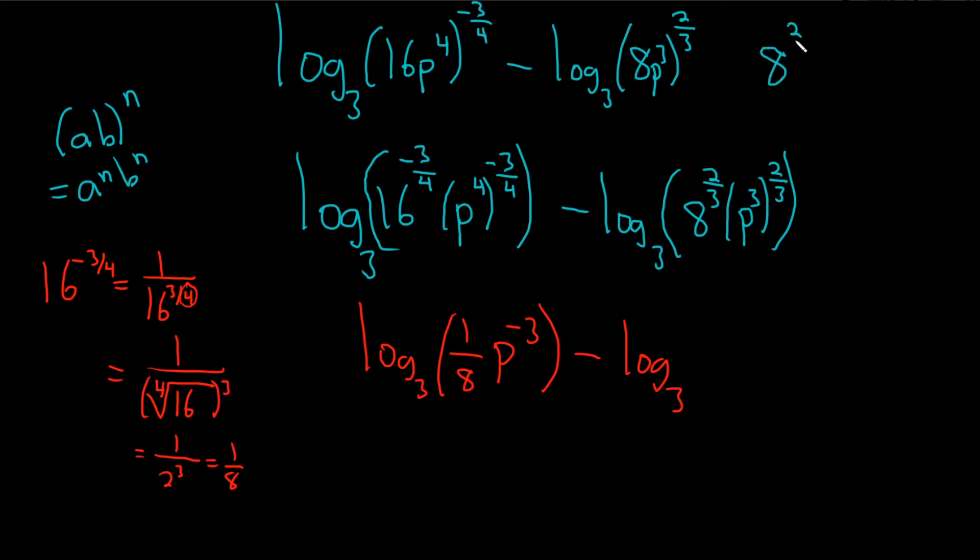8 to the 2 thirds. The number on the bottom of the 3 goes in the little pocket, so it goes here like this. And the 8 goes here. And then you can just put the 2 on the outside. And then cube root of 8 is 2. So you get 2 squared, so you get 4.